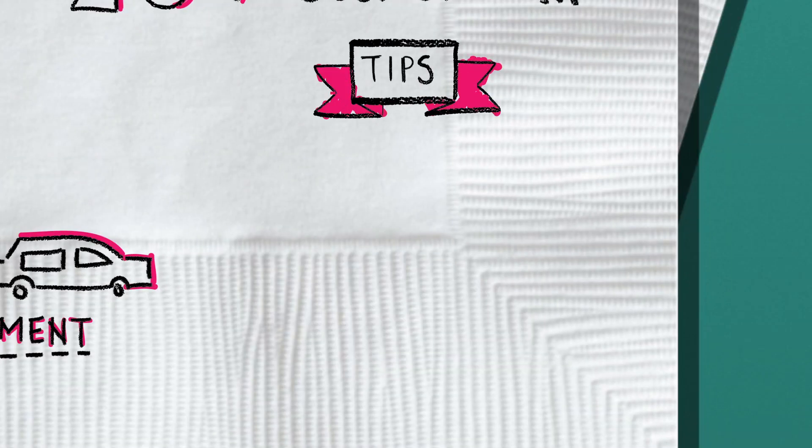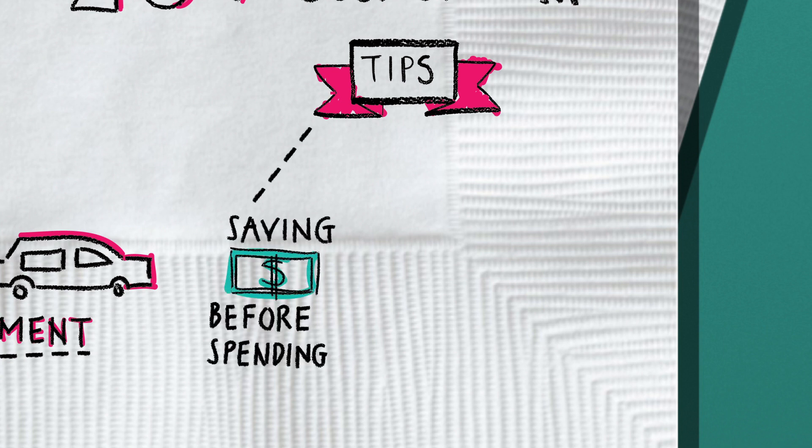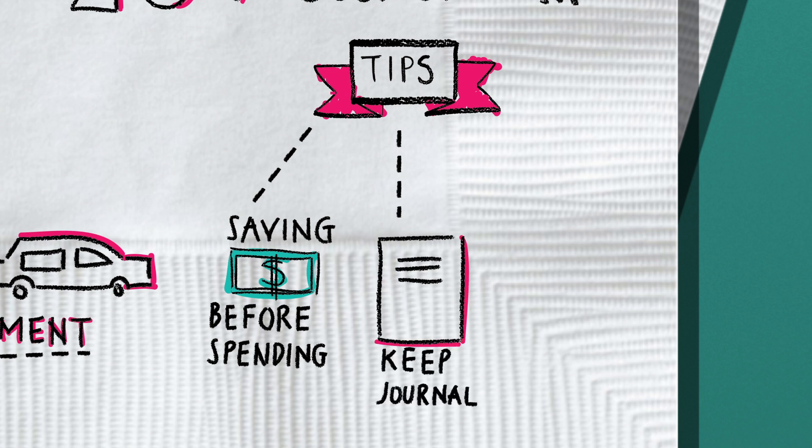Here are some tips for saving. Plan ahead. Make a budget and commit to placing a percentage of your income into savings before you begin spending it. Keep track of what you're spending in a journal and review your spending to find places to cut back.